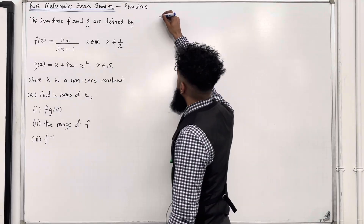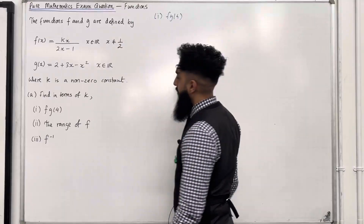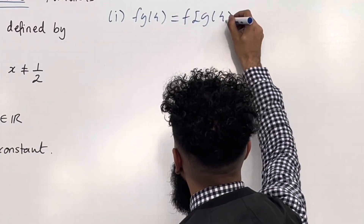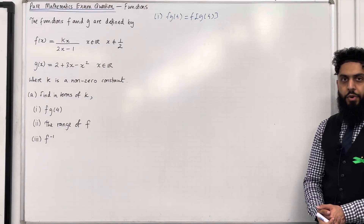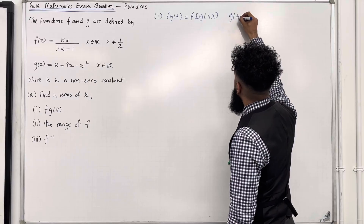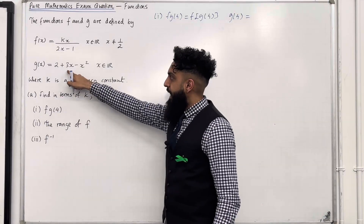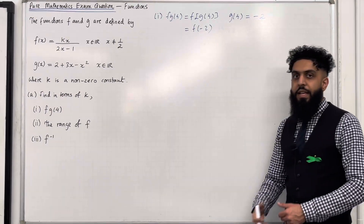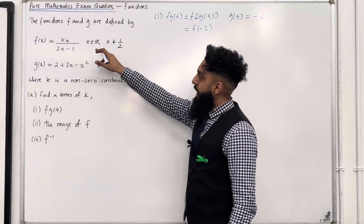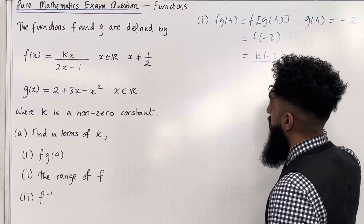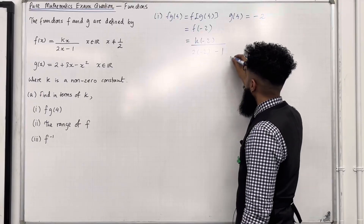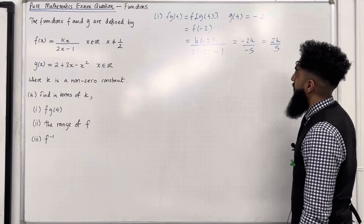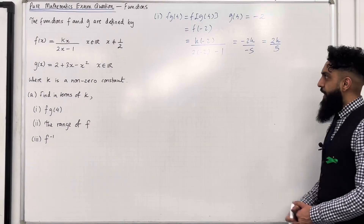Let's have a look at the solution to part 1. We've got f of g of 4. This is a composite function, we can rewrite it as f square bracket g of 4. So the input for the function f is g of 4. We substitute x equal 4 into g of x, which gives minus 2. So this becomes f of minus 2. Now we substitute x equal minus 2 into f of x, giving k times minus 2 all over 2 times minus 2 minus 1. This simplifies to minus 2k over minus 5, which is 2k over 5. Hence f of g of 4 in terms of k is 2k over 5.